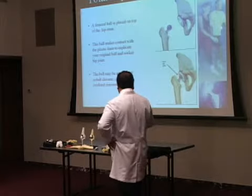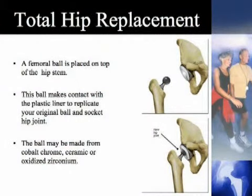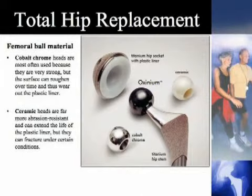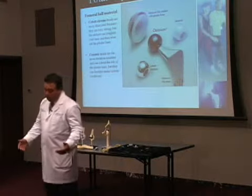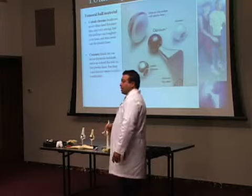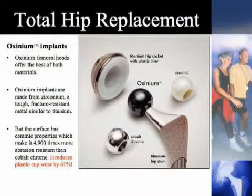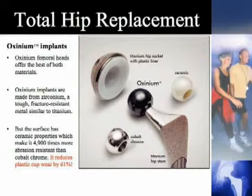Then the head is placed. Just as in total knees, there are different heads we use: cobalt chrome, ceramic, oxenium, and different metals coming out. They're all pretty good — theoretically some are supposed to last longer, but they pretty much all last between 15 to 25 years. Head sizes range from as small as 22 millimeters to as large as the cup placed in your pelvis minus 6 millimeters.